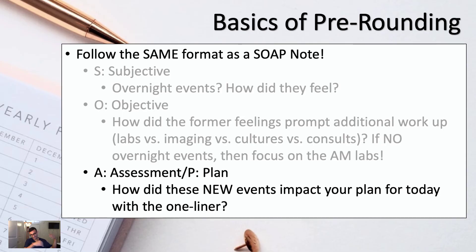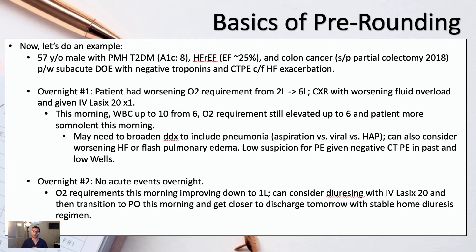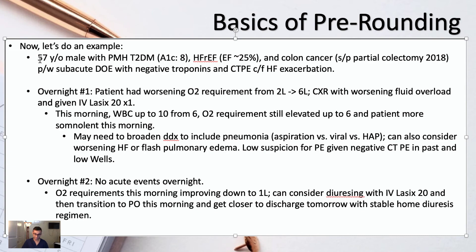Let me walk you through an entire sample for a patient I'm pre-rounding on — the 57-year-old who came in with shortness of breath. I come in the next morning and the overnight intern tells me his O2 requirement got much worse — he went from two liters to six liters overnight. His chest x-ray showed worsening bibasilar opacities concerning for fluid overload, so they gave him IV Lasix 20mg. I then look over the imaging and morning labs before seeing the patient.